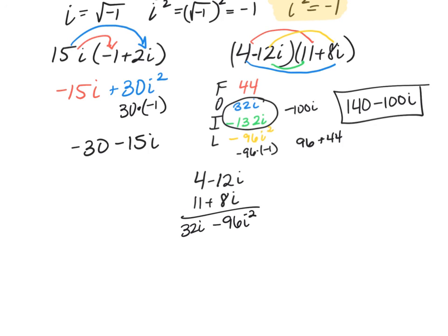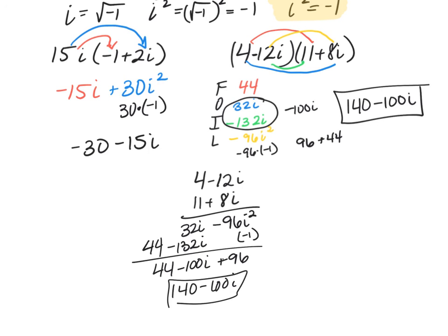We're going to do 11 times negative 12i, which is negative 132i. And then we're going to do 11 times 4 gives me 44. And I get 44 minus 100i. And then remember negative 1, so plus 96. And I end up with 140 minus 100i, just like if I did FOIL.